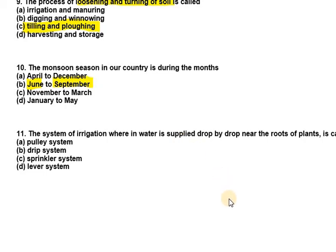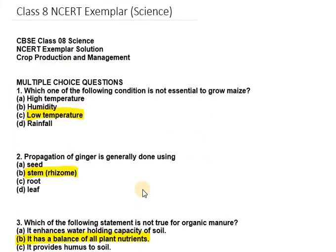Question eleven: the system of irrigation wherein water is supplied drop by drop near the roots of plants is called the drip system. That covers all the MCQs based on chapter one on crop production and management. Thank you for watching this video — please like, share, and subscribe.